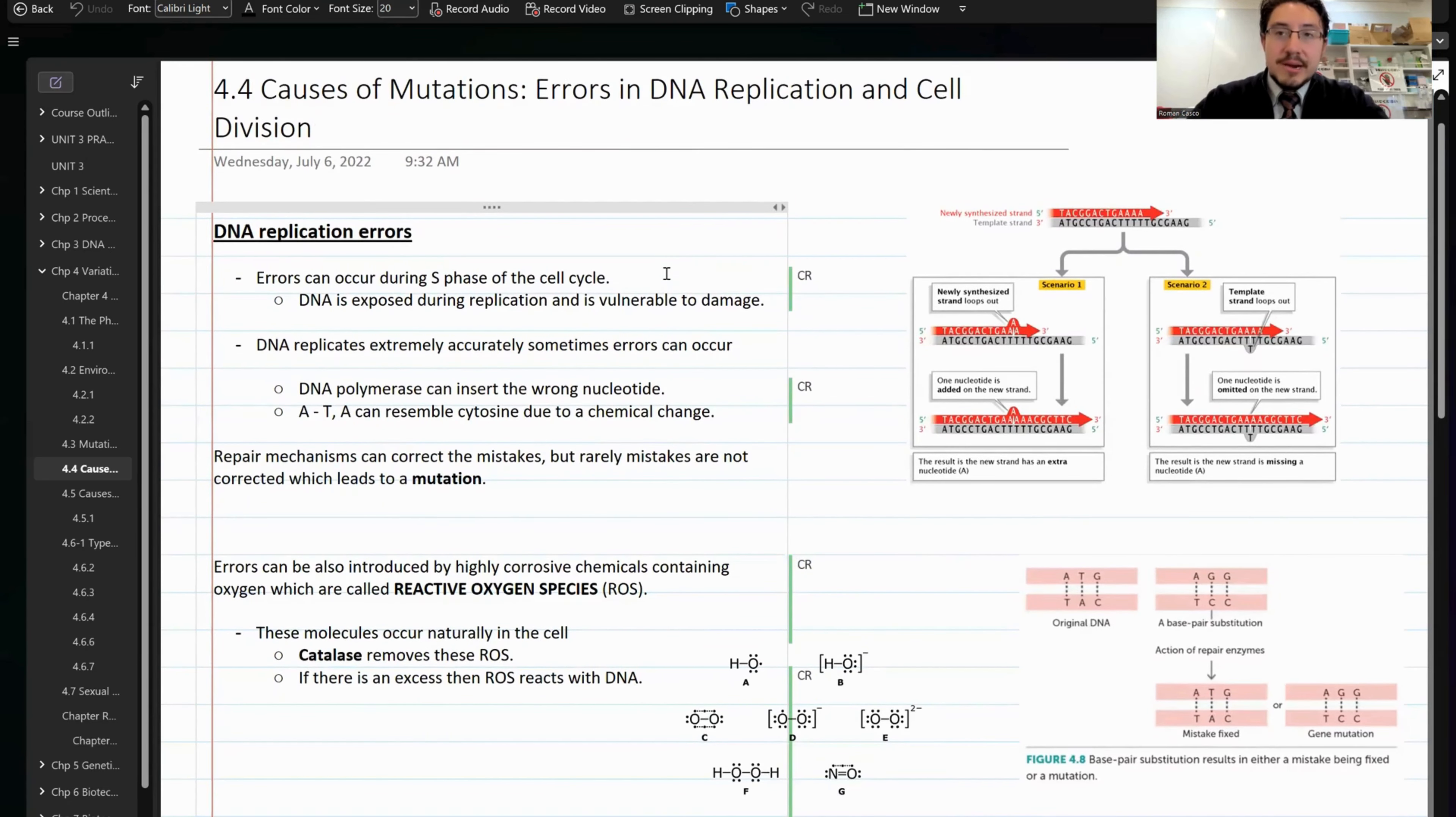So in terms of DNA replication errors, you guys know that DNA replicates during the S phase of the cell's life. During the cell cycle, you have the G1, S, and G2 phases comprising interphase. During S phase, DNA is replicating, using a bunch of enzymes to enable it to make duplicates. During that period of time where DNA is exposed to environmental factors and whatnot, there is a chance that errors could occur.